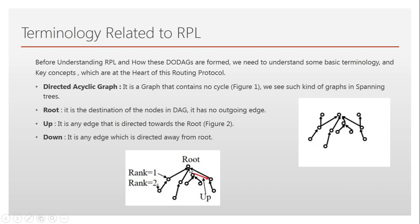A root is the destination of nodes in a DAG. In the blue figure, the node at the top that every other node is directed towards is known as the root. An 'up' edge is one that is directed towards the root — you can look at this red edge in the graph; it appears to be moving down, but it is actually moving towards the root. A 'down' edge is one moving away from the root.